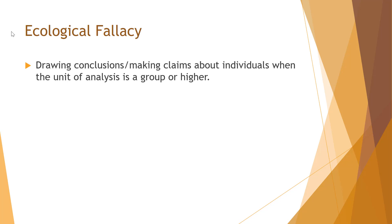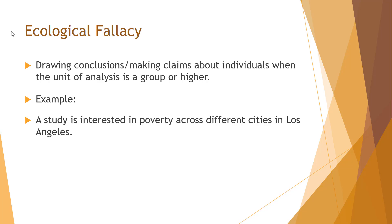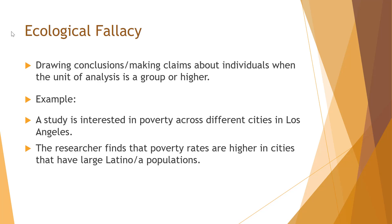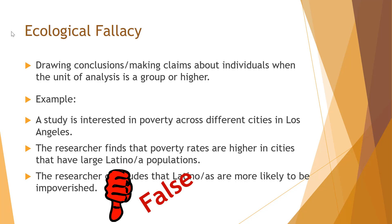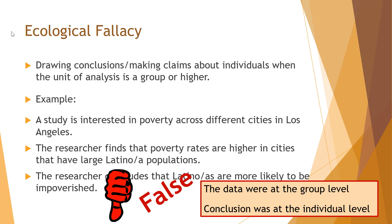The ecological fallacy happens when we draw conclusions about individuals when the unit of analysis is a group or higher. For example, a study examining poverty rates across different cities in LA finds that poverty rates are higher in cities with large Latino populations. The researcher then concludes that Latinos are more likely to be impoverished. The study was about cities — none of the data are about individuals — yet the researcher drew a conclusion about individuals from group-level data. That conclusion is false.